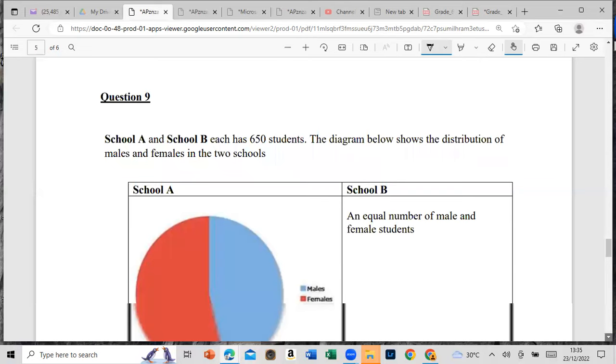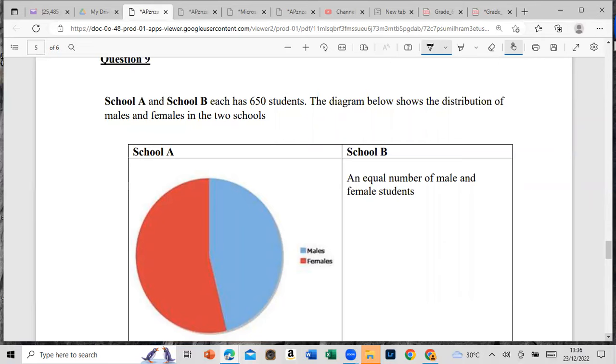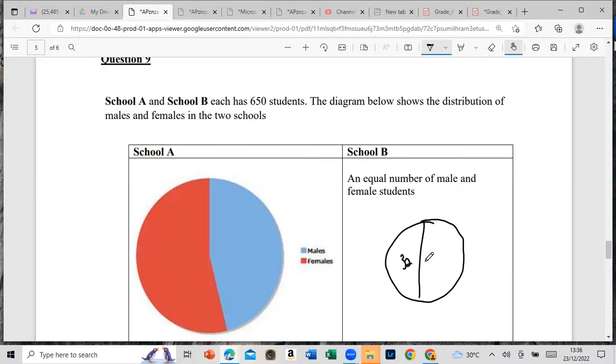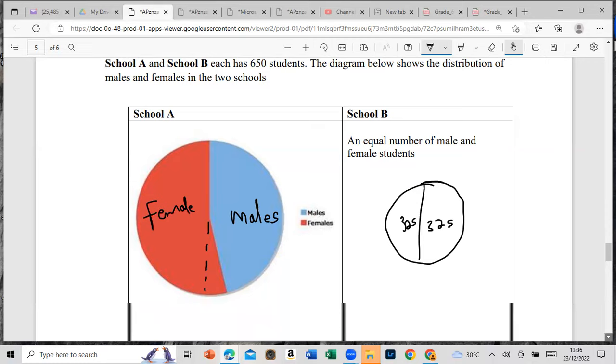Question 9 says: School A and School B each has 650 students. The diagram below shows the distribution of males and females in the two schools. School B have an equal number of male and female, so that'll be 325 and 325. Females are red. So this means you have more females than males in School A.